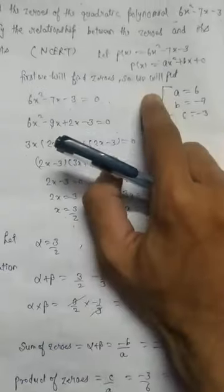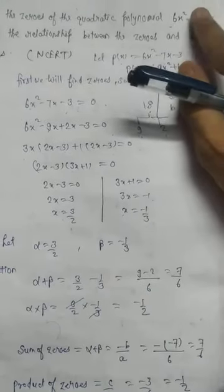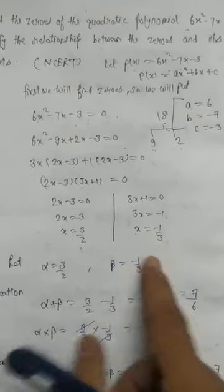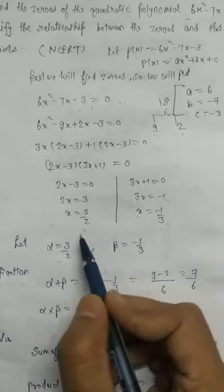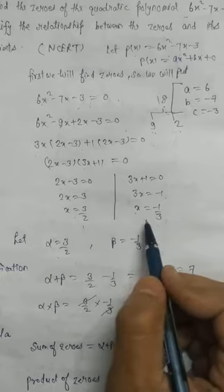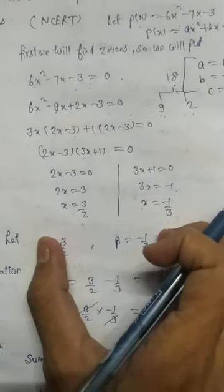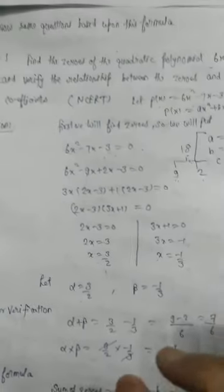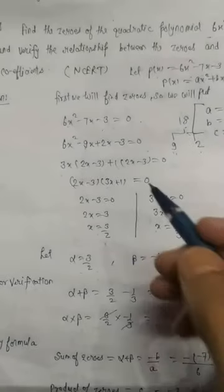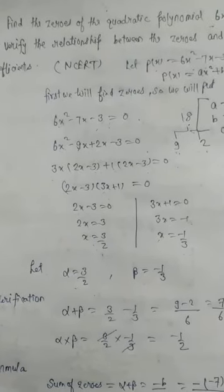Whatever the degree of the polynomial, that is how many zeros we get. For a cubic polynomial we would get three zeros. Now, as stated in the question, we need to verify the relationship between the zeros and the coefficients. First, directly calculate the sum and product from the values of alpha and beta.